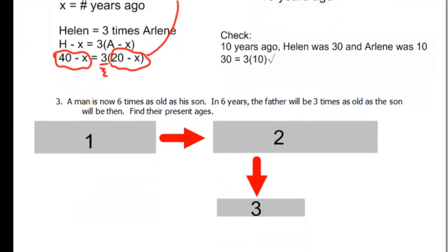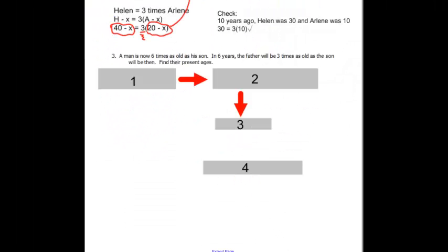Let's try number three. The man is now six times as old as his son. In six years, the father will be three times as old as the son will be then. Find their present ages. And when they're saying this then, students often get confused by this. This is talking about in six years. In six years. It's always a continuation of that sentence. In six years, the father will be three times as old as the son will be in six years. Find their present ages.